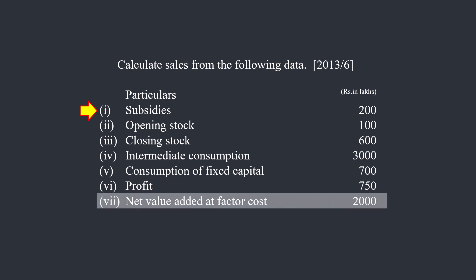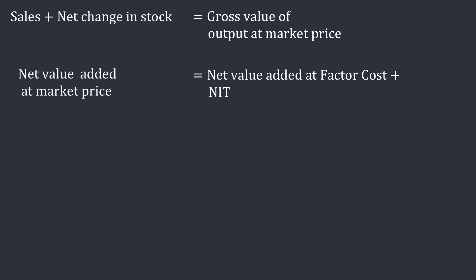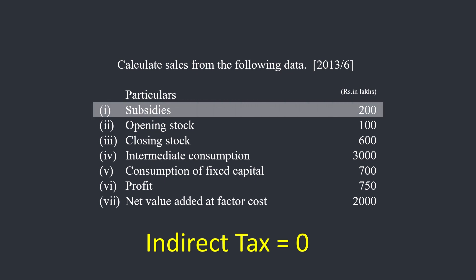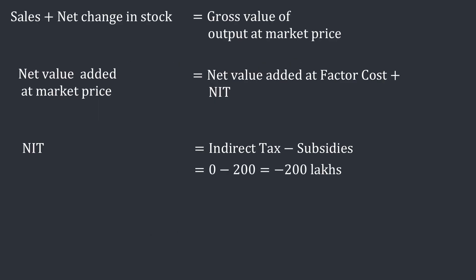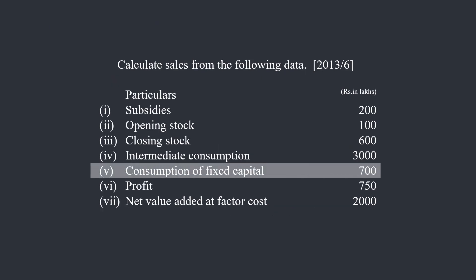We shall start from net value added at factor cost, which is 2000 lakhs. If we add net indirect tax to net value added at factor cost, we will get net value added at market price. Net indirect tax is indirect tax minus subsidy. There is no information about indirect tax, so we shall take it as zero. Subsidy is 200 lakhs, so net indirect tax is negative 200. Adding this to 2000 gives us net value added at market price: 1800 lakhs.